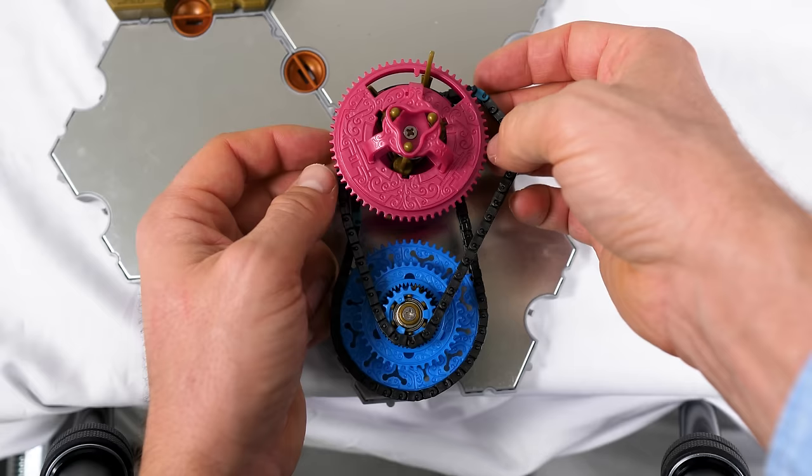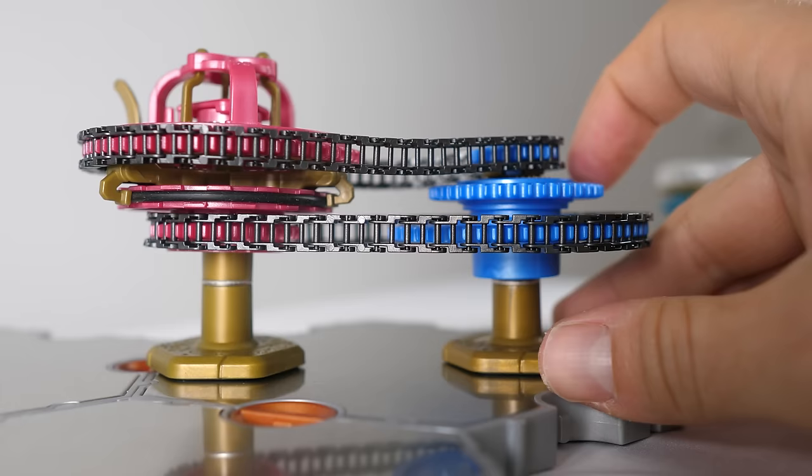You can even make a diode by connecting a transistor to itself via a junction. Look, it will spin one way, but not the other, just like a diode. So let's see if we can build some interesting circuits.